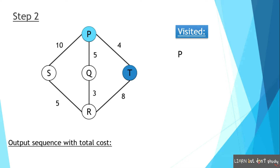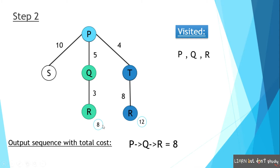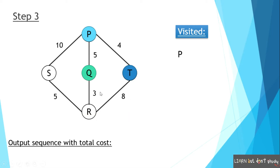The lowest cost is found. In Q, we can see R, so we can't skip that option. R is going to be visited. Now the path is P to Q, Q to R. This is a total cost of 8. Now we can find the shortest path to R. So we can continue to further steps — Step 3.